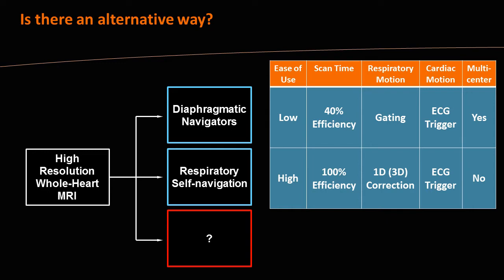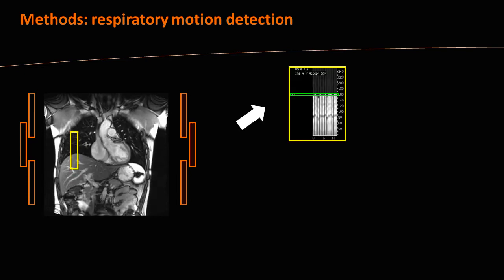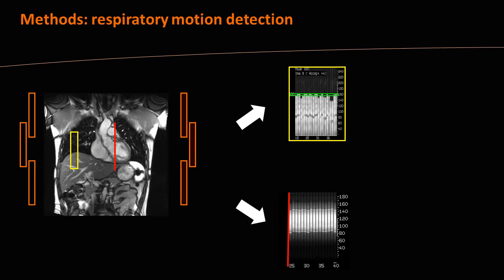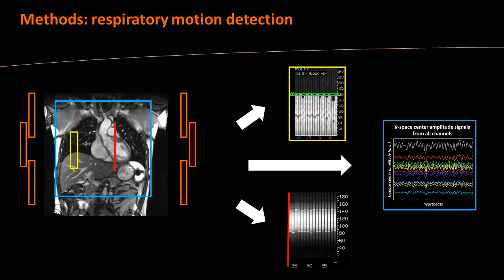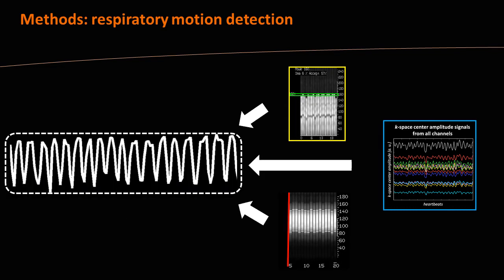Is there an alternative way to do high-resolution whole-heart coronary MRI? The core concept is that we always have to detect respiratory motion whether we gate or correct. We can use the navigator as before, use self-navigation directly from the data, or use a simpler method by looking at the intensity over time across all coils — extracting a respiratory signal from FID navigators, i.e., the k-space center amplitude fluctuation of the channels. In this work we use the k-space center, but any of these methods gives a usable respiratory signal.